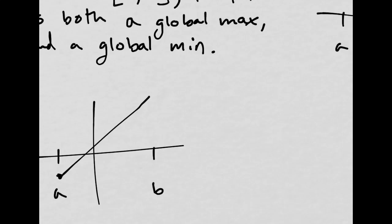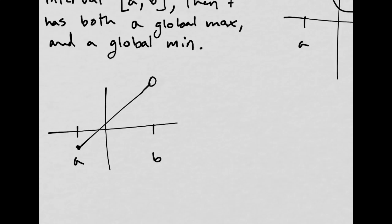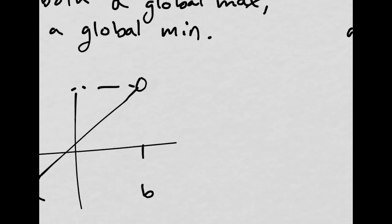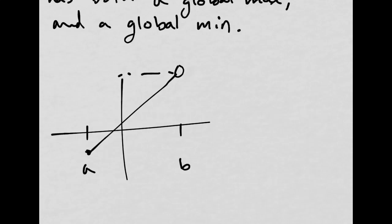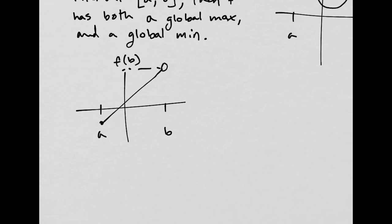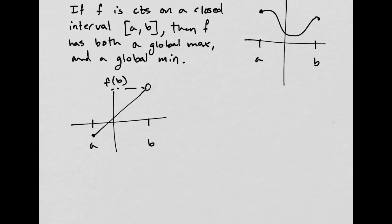meaning if it was an open interval, I can get whatever this is, F of B. I can get super close to this, but I never actually get there. So there actually is no maximum in this case, just because you can get closer and closer and closer to F of B, but never actually get there. So there is no maximum value.